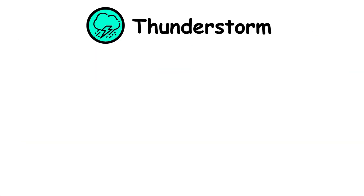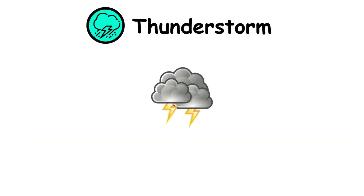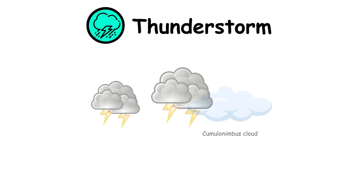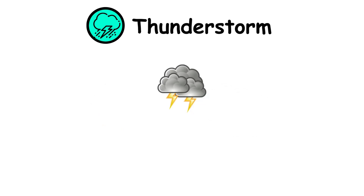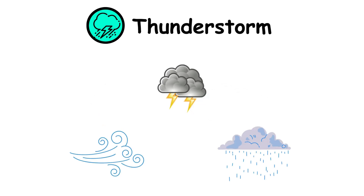Thunderstorms. A thunderstorm or lightning storm is a storm characterized by the presence of lightning and thunder. They occur in a type of cloud called cumulonimbus. Thunderstorms are often accompanied by strong wind and heavy rains.